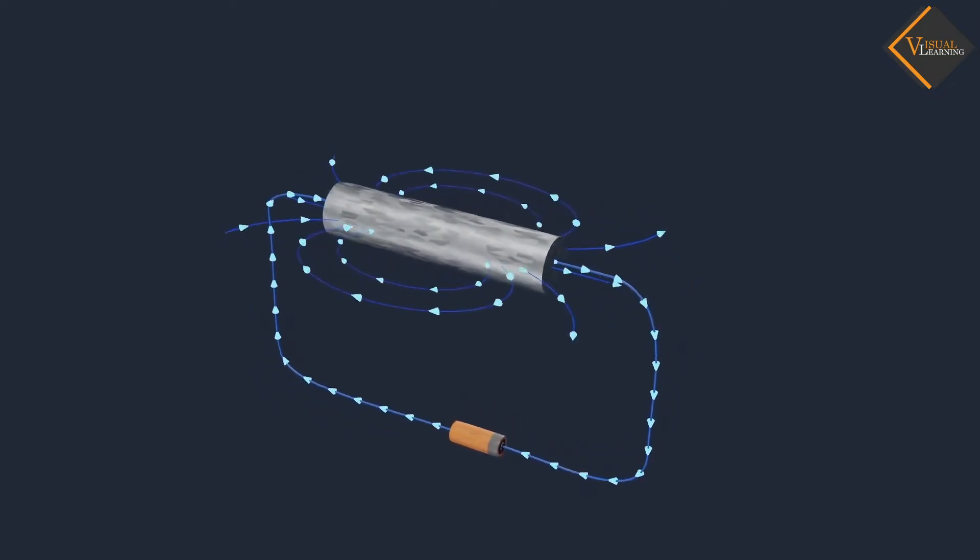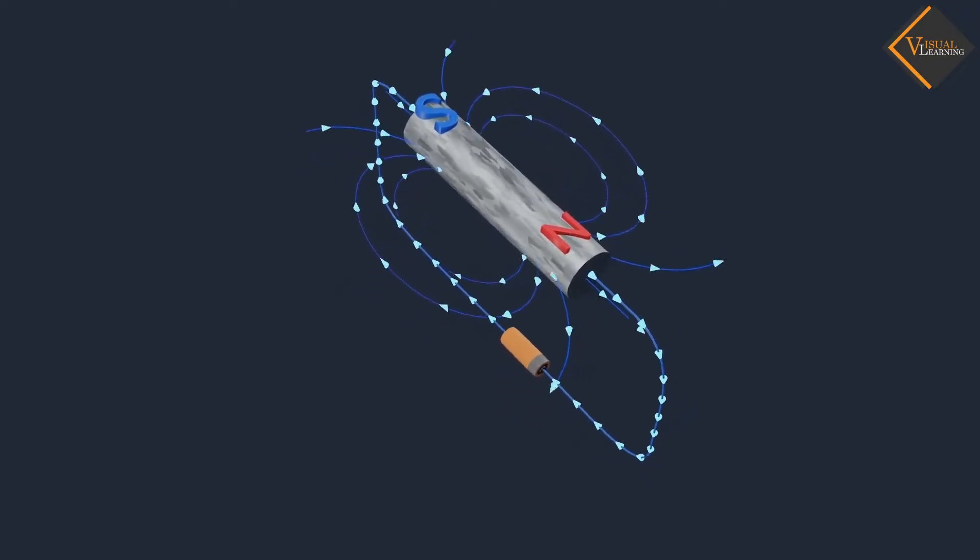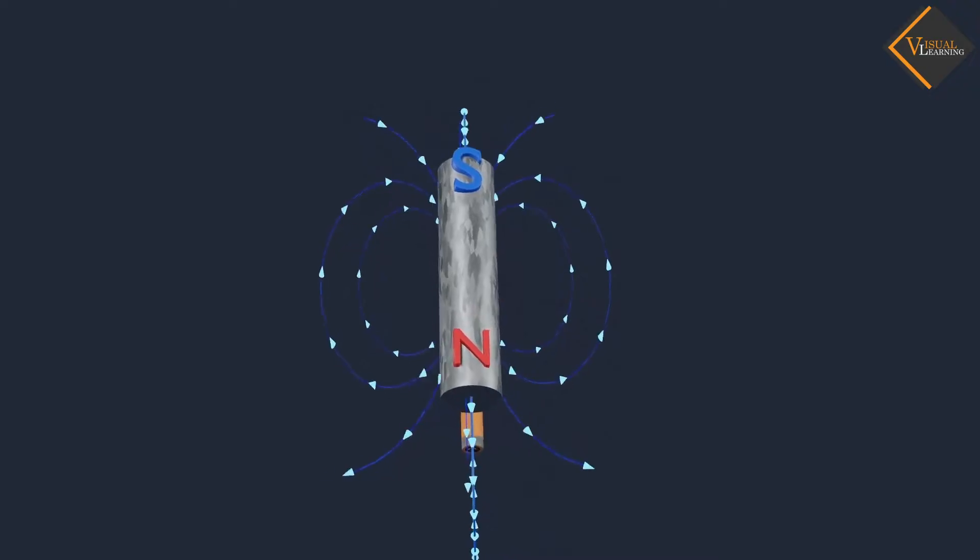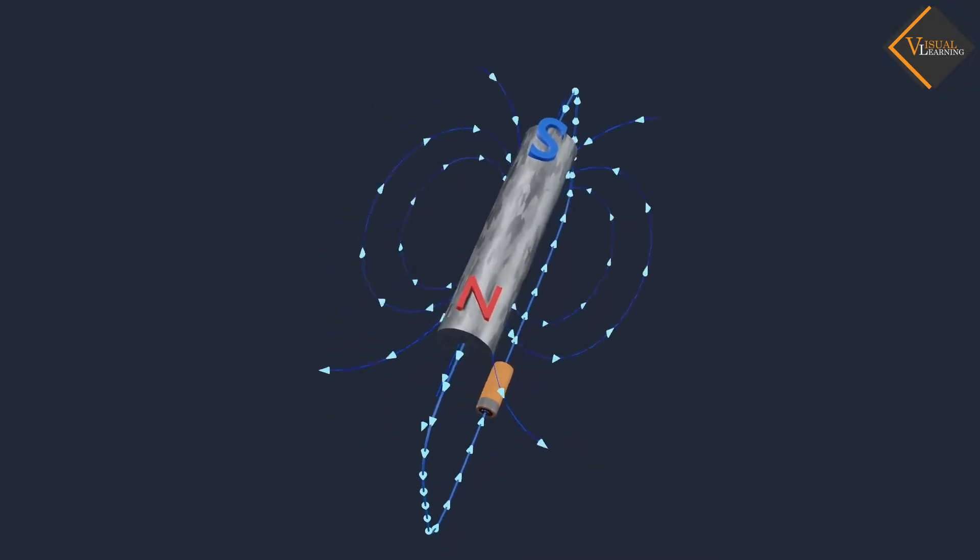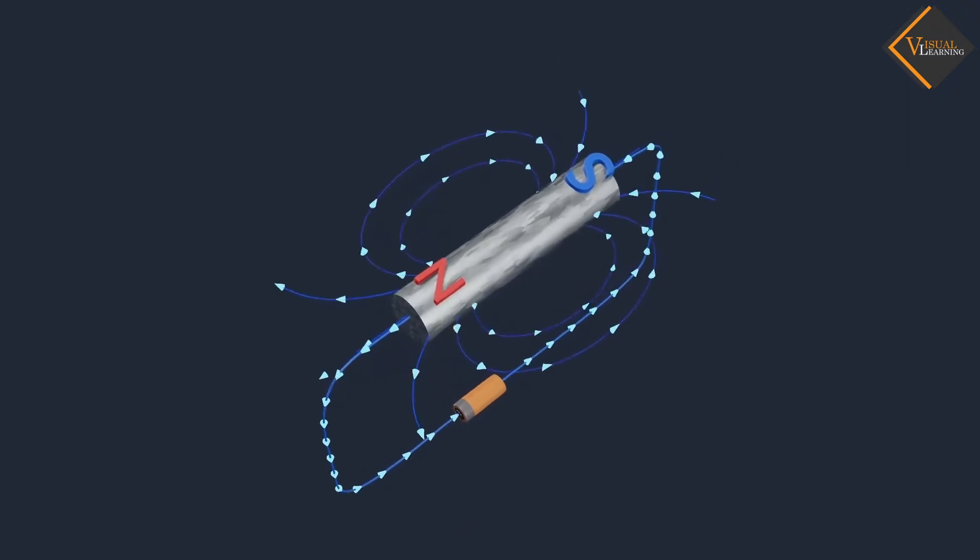And this conductor also has polarity, like a bar magnet, or like any other permanent magnet. This means conductor has two poles, one behaves as a magnetic north pole, while the other behaves as a south pole.